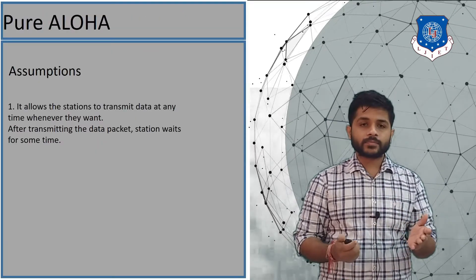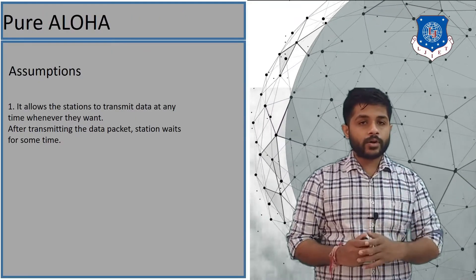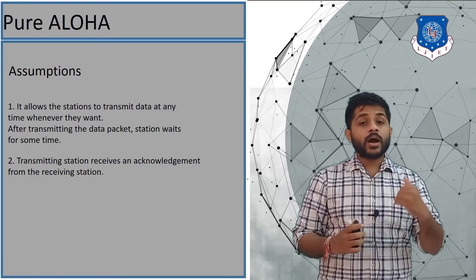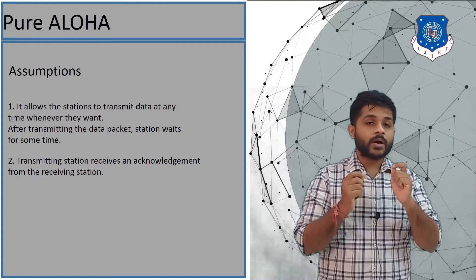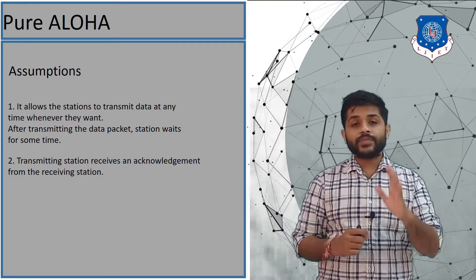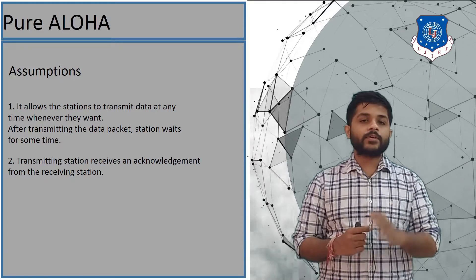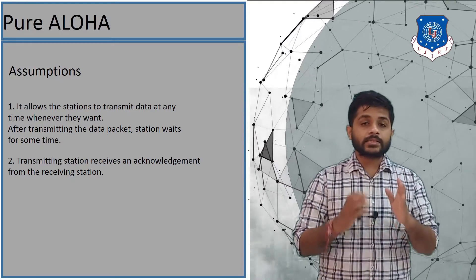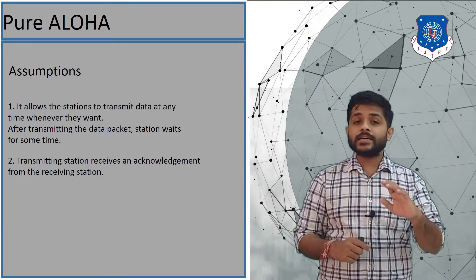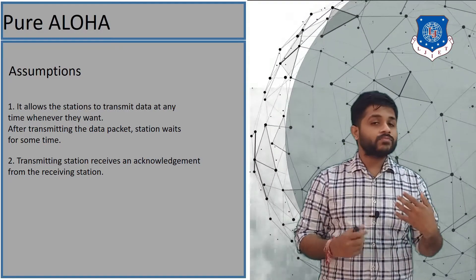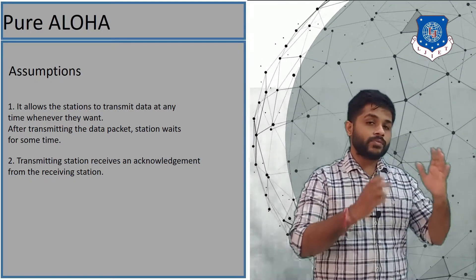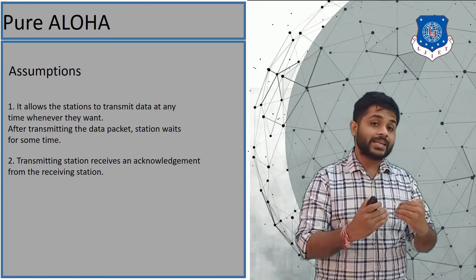In pure Aloha, any station can transmit data at any time — there is no time limit. After sending the packet, the sender will wait for a fixed amount of time for an acknowledgement — for example, 10 seconds. If the sender has not received an acknowledgement within that time, it assumes there is a collision in the network, waits for some random backoff time, and then sends the packet again.